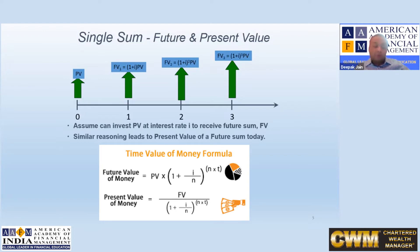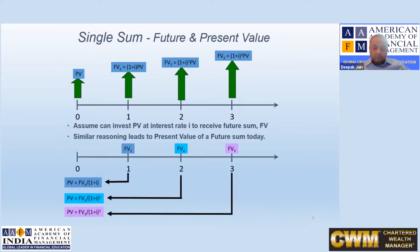There are two concepts, two processes which you should be aware of. One is compounding, by which I convert a present value into future value. The second is discounting, where I know a future value and I convert it into present value. So I have shown you both the processes — future to present and present to future.